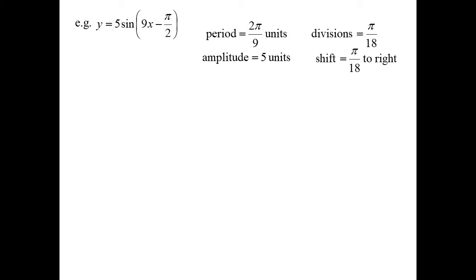The shift is function x minus a. So you've got to factorize the 9 out, if you like. So when you factorize the 9, you'll get x minus π/18. Let's draw up our axis. This sine curve, well normally, I would start at the origin.